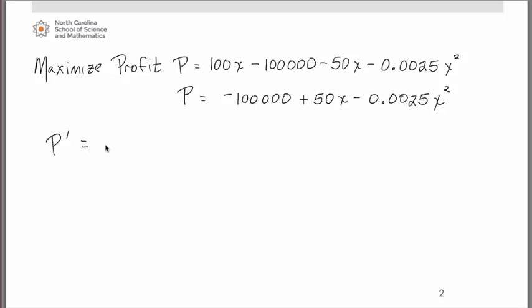We know that we have to take the derivative of that. That simply is going to be 50 - 0.005x, of course we have to do the 0.0025 times 2, that's where the 0.005 comes from, set that equal to 0. Very easy to solve. We end up with x = 10,000 and that's our critical number. If there is going to be a maximum for this profit equation, this is the value at which it's going to occur.